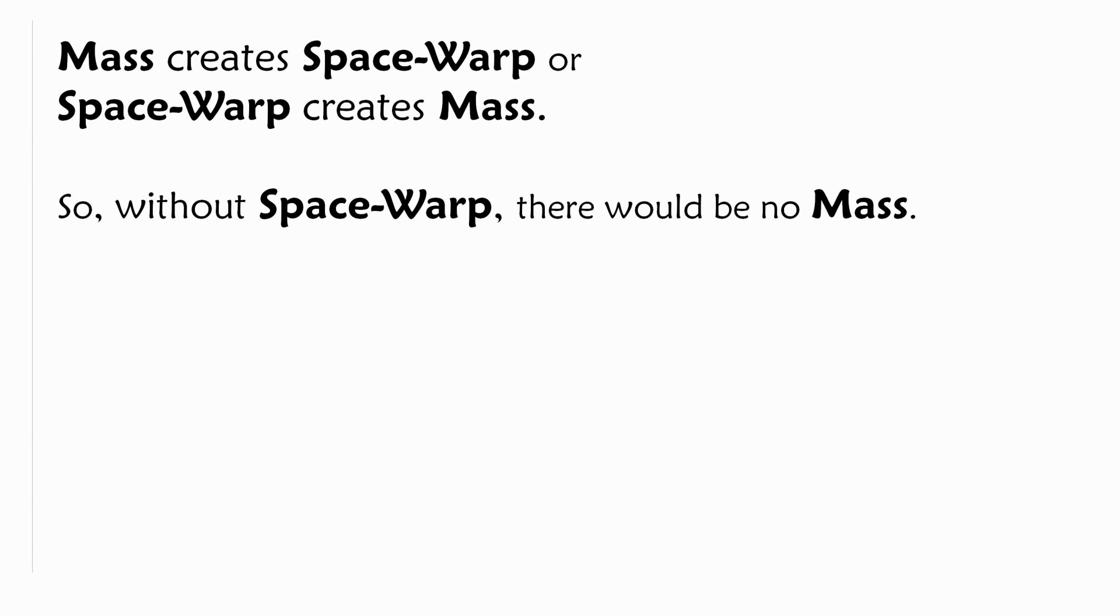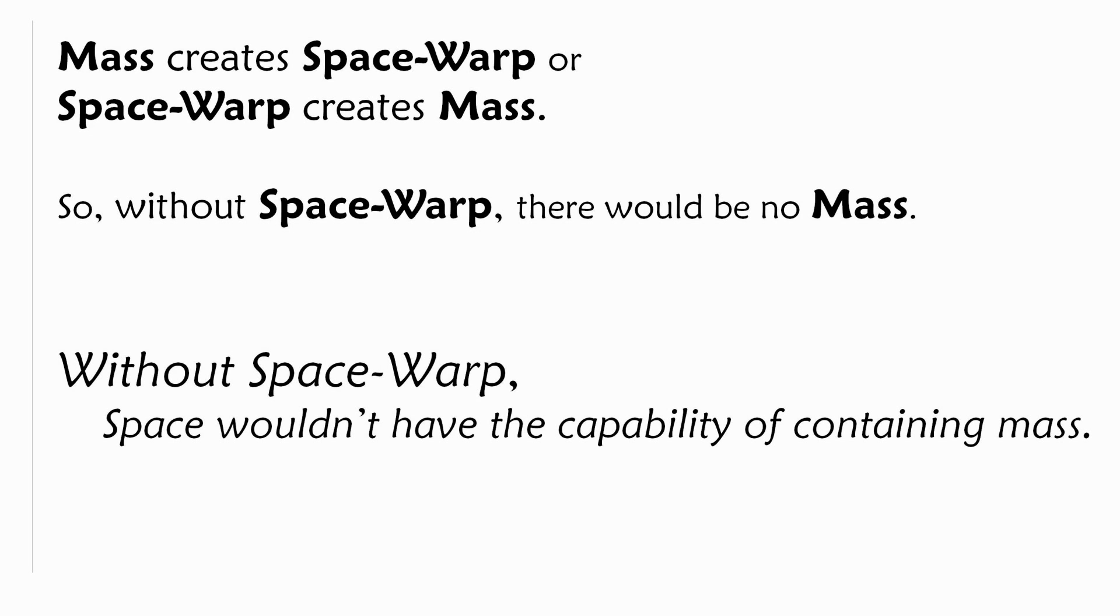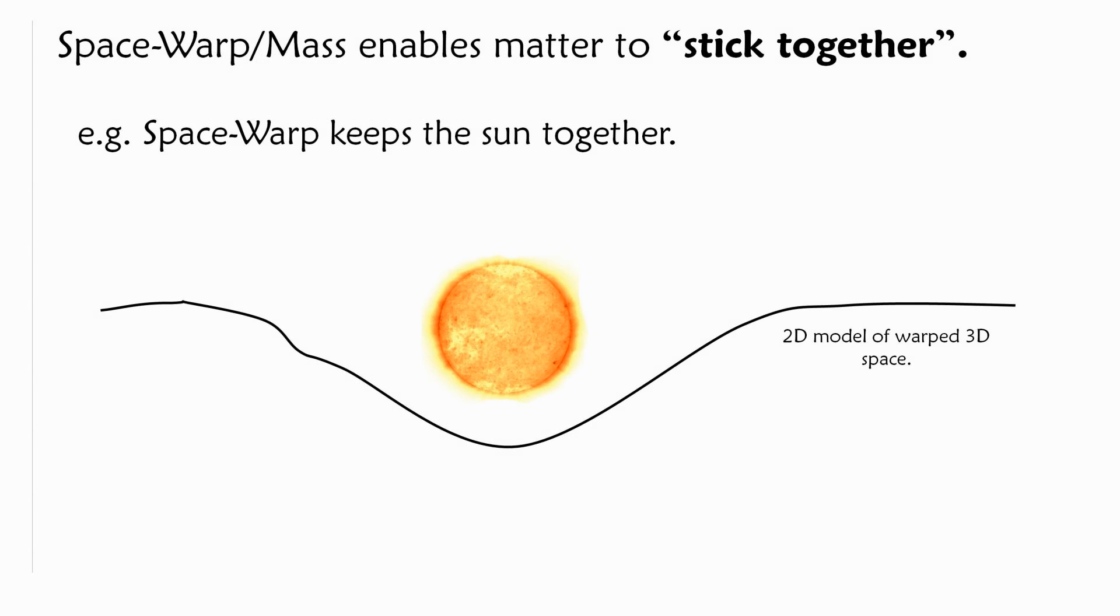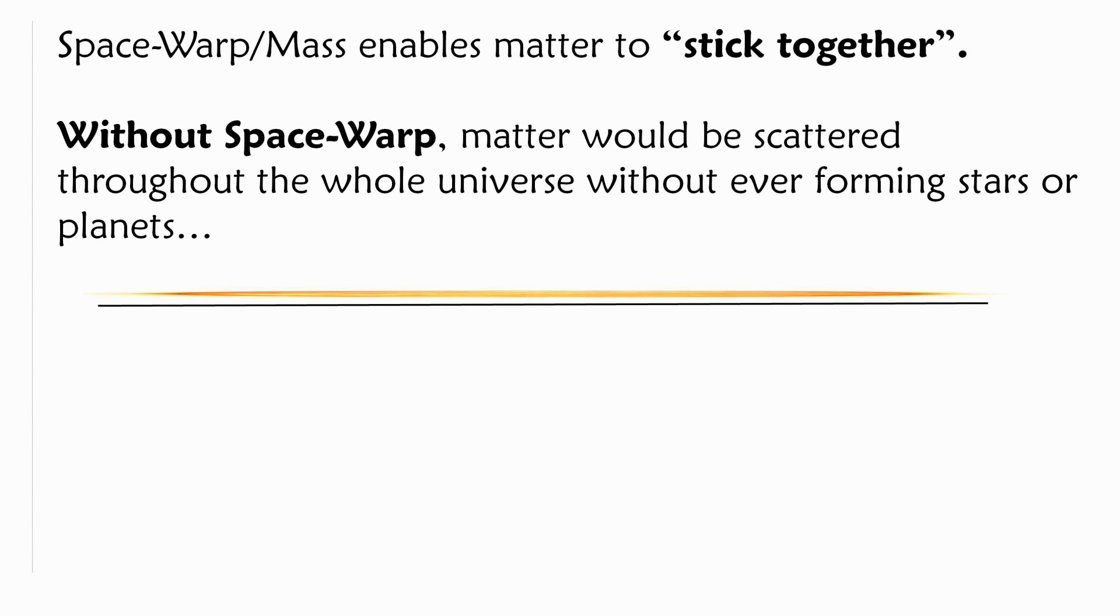Since mass creates space warp, or space warp creates mass, either or the result is the same. Without space warp, there would be no mass. So important to know is, without space warp, space wouldn't have the capability of containing mass. Space warp and mass enables matter to stick together. For example, space warp keeps the sun together. Without space warp, matter would be scattered throughout the whole universe without ever forming stars or planets.